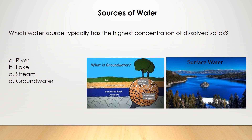Another common type of question that you'll see on the exam will be on sources of water. The state likes to test your knowledge regarding the common traits of groundwater and surface water. For example, this question reads: which water source typically has the highest concentration of dissolved solids? The answer choices are river, lake, stream, or groundwater. The correct answer is groundwater.